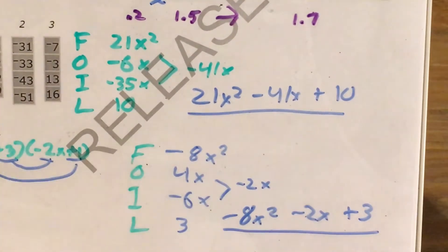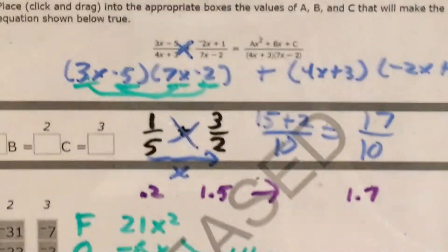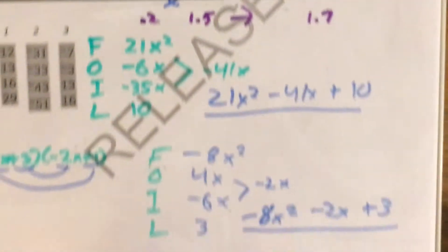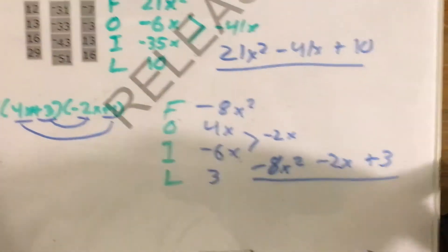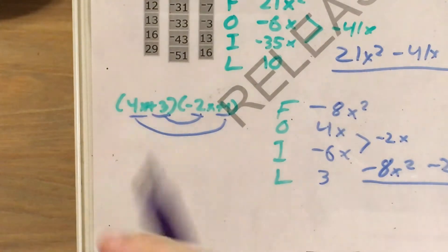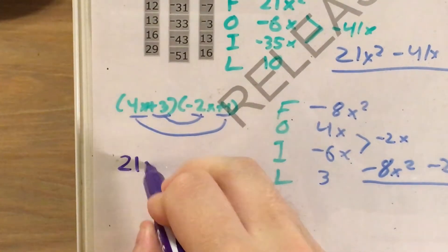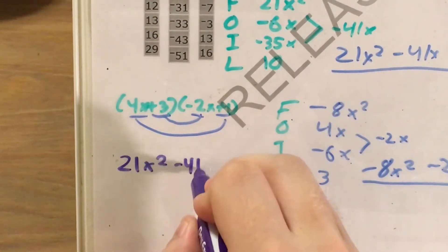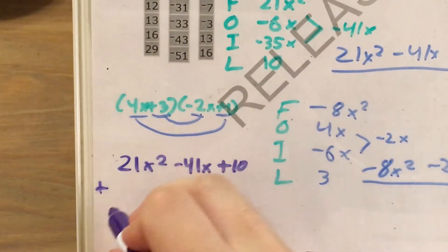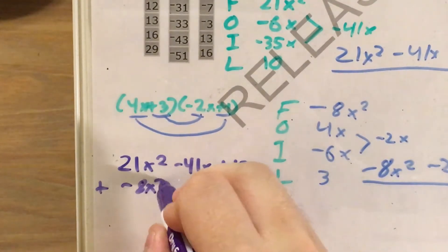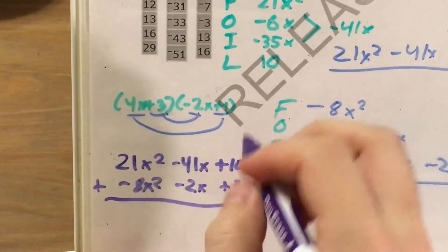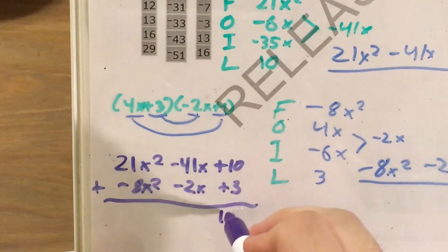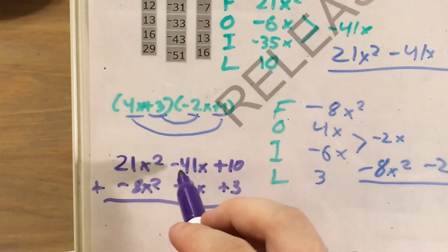So now that I have these two polynomial expressions, I do need to add them together. And the way that I'm going to do that is just by adding them. So let me come over to this side of the paper. And I'm adding 21x squared minus 41x plus 10 to negative 8x squared minus 2x plus 3. Adding my numbers, 10 plus 3 is 13.